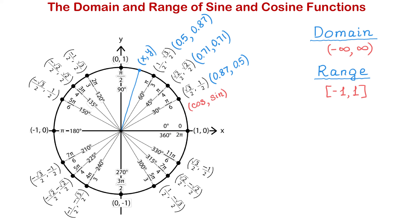The range of the cosine function is also any number from negative 1 to positive 1. So the domain of both sine and cosine functions is any number from negative infinity to positive infinity, and the range is any number from negative 1 to positive 1.